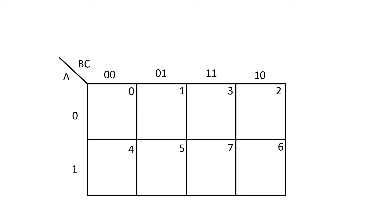Let us consider a three-variable KMAP which consists of eight cells: 0, 1, 2, 3, 4, 5, 6, 7. Here I am going to place ones in some of these cells. When we place ones, that means we are going to simplify a SOP expression; to simplify a POS expression, we place zeros instead. So here I am placing ones in cell numbers 0, 1, 2, and 4. The mapping is done.